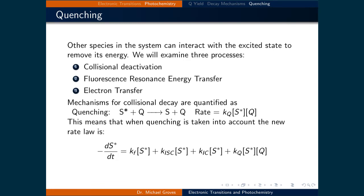We've discussed how the system naturally relaxes. We can also introduce other species into the system which can interact with the excited state to remove its energy. This is called quenching. We will examine three quenching processes: collisional deactivation, fluorescence resonance energy transfer, and electron transfer. Looking first at collisional quenching, this new mechanism of decay involves a reaction between S* and the quencher Q, resulting in a relaxed S and Q. The rate of this process is quantified as Kq times the concentration of S* times the concentration of Q.